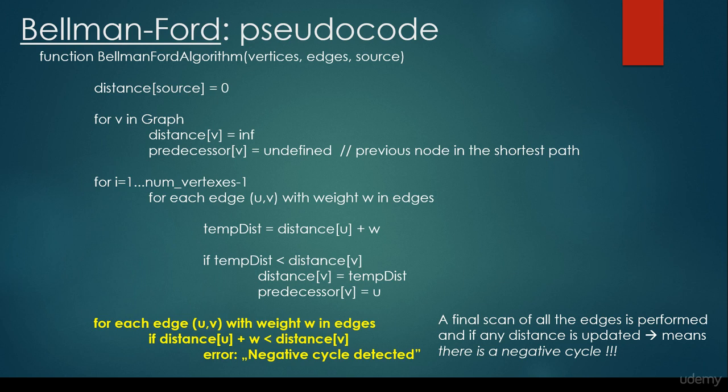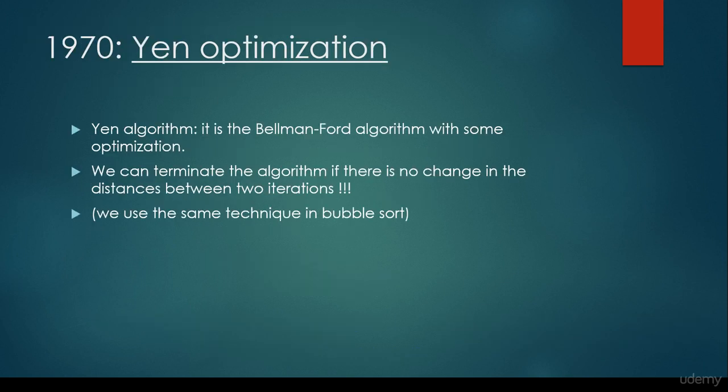We have the so-called Yen optimization, it was invented in 1970, that sometimes Bellman-Ford algorithm is very slow, so it would take a lot of time to finish its calculation. So we can have some optimization, basically.